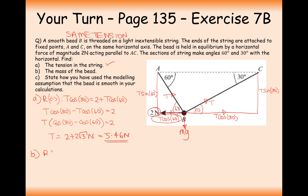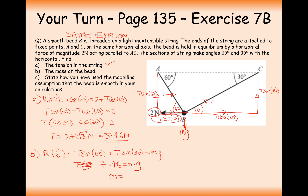For part B, resolving vertically: two upward forces and the downward weight force. T sin 60 plus T sin 30 equals Mg. Substituting T equal to 5.46 into the left-hand side — T times (sin 60 plus sin 30) — gives 7.46, so Mg equals 7.46 newtons. Dividing by 9.8 to find mass rather than weight gives 0.76 kilograms.